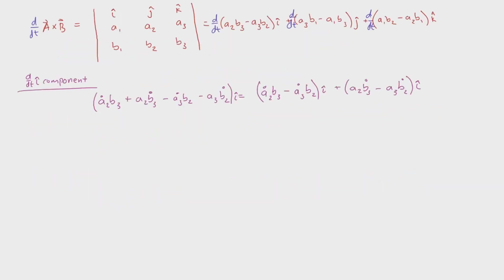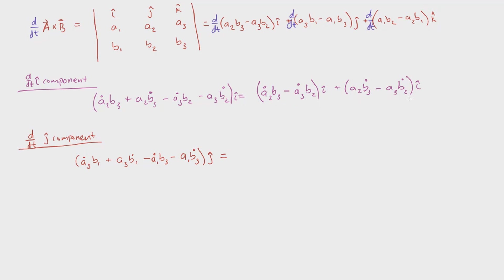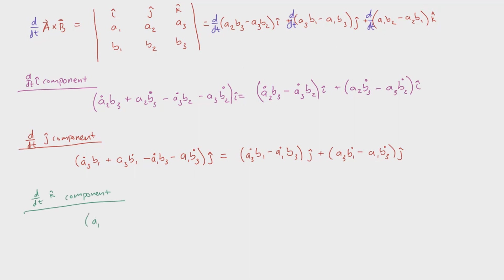Now we take the derivative of the j component: that's going to be ȧ3·b1 plus a3·ḃ1 minus ȧ1·b3 minus a1·ḃ3, all in the j direction. Again, I'll group the derivatives of a on one side and derivatives of b on the other. Lastly, we take the derivative of the k component: ȧ1·b2 plus a1·ḃ2 minus ȧ2·b1 minus a2·ḃ1. And I'll group those in the same fashion.